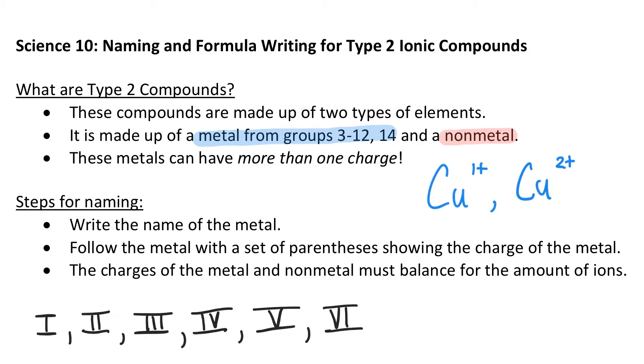When you write those though, like I said before, you're going to be writing them in a set of parentheses or brackets. So after every metal will come the metal's charge or the charge on the cation. And they'll always be expressed in Roman numerals with brackets. The charges of the metal and nonmetal must balance for the amount of ions. Obviously they have to be equal to zero when you add them up.